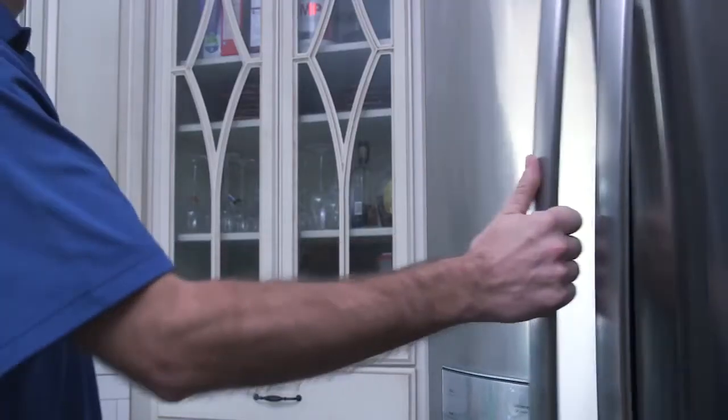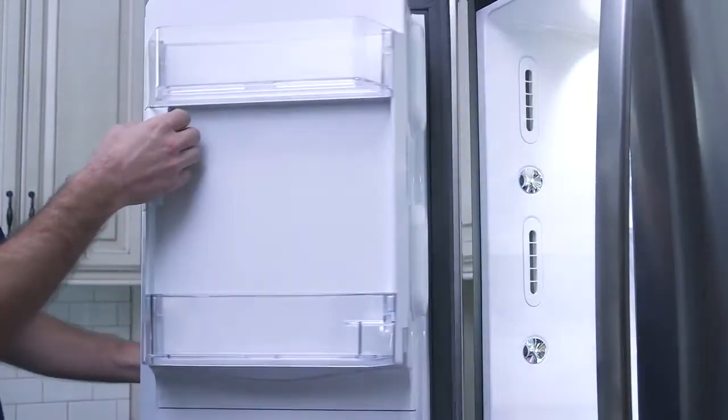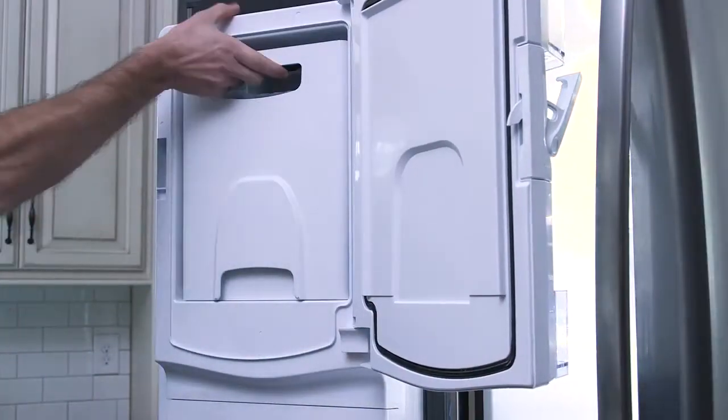Next, locate the ice maker inside the left side refrigerator door. Open the ice box door and remove the ice bucket to access the ice maker.